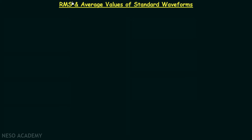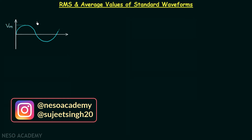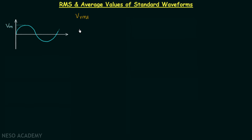In this presentation we are going to see the RMS and average values of some standard signal waveforms. The first waveform is the sine wave. The RMS value for a sine wave is equal to Vm over root 2, where Vm is the maximum value the signal can attain. The average value is equal to zero for the full wave, and equal to 2Vm over pi for the half wave.